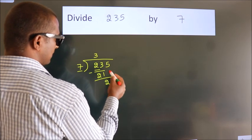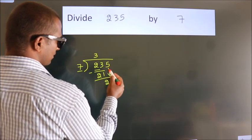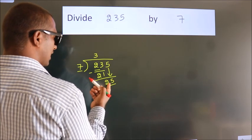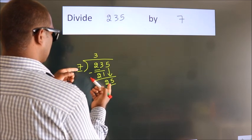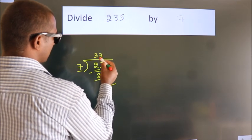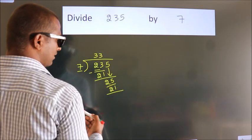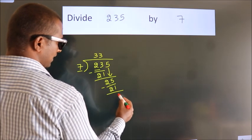After this, bring down the beside number. So, 5 down, so 25. A number close to 25 in 7 table is 7 threes, 21. Now we subtract, we get 4.